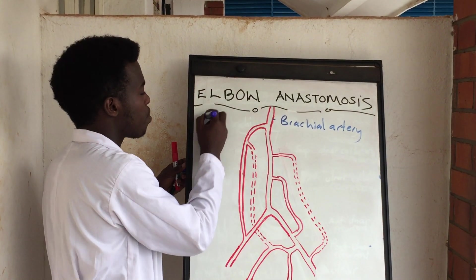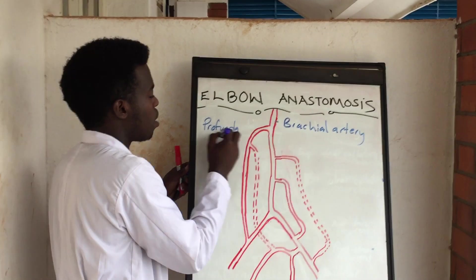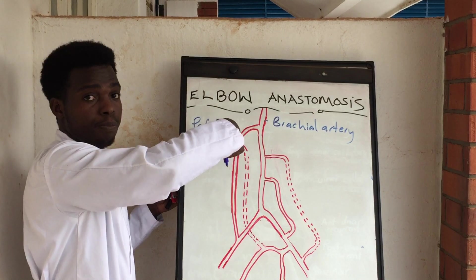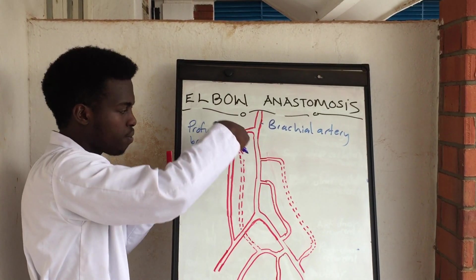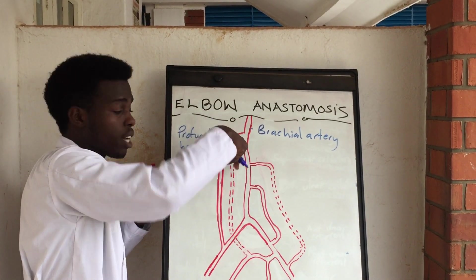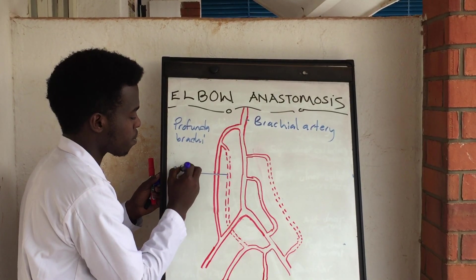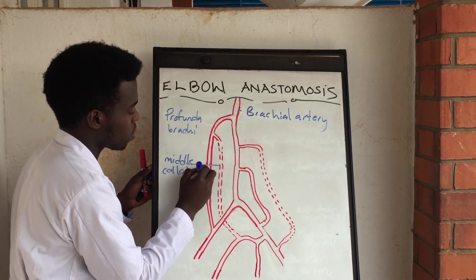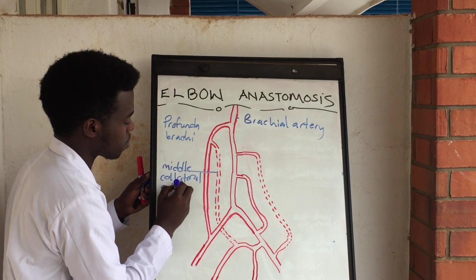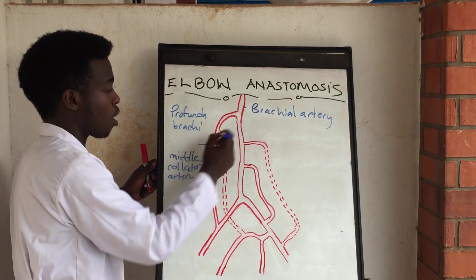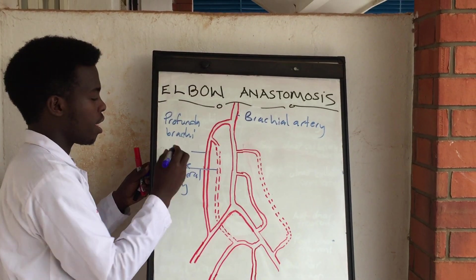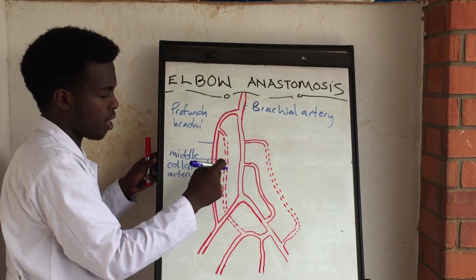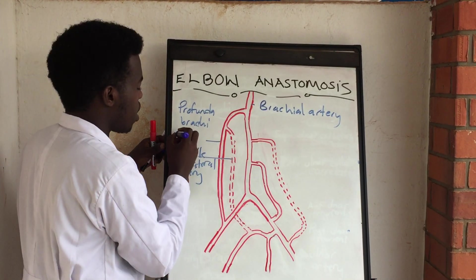The profunda brachii is a deep branch which continues to give off the middle collateral artery. As it comes down, it gives off this middle collateral artery, and its continuation is going to be the radial collateral artery.